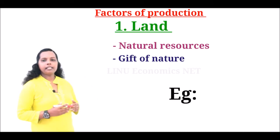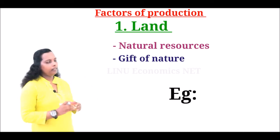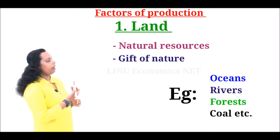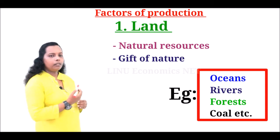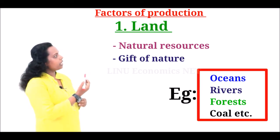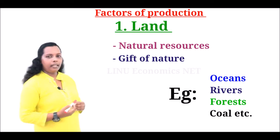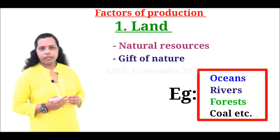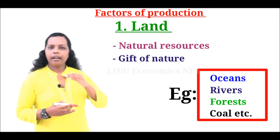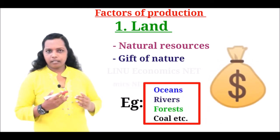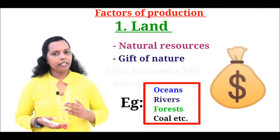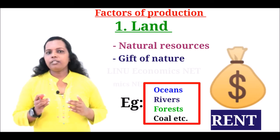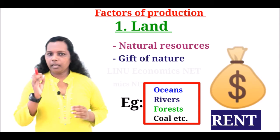Some typical examples of land are ocean, river, forest, coal, etc. In our example of the wooden table, tree or wood is land, because a tree is a natural resource. The reward or factor income of land is rent.